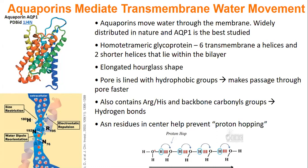An aquaporin is a protein that will transport water through the membrane. There are many different aquaporins. The most studied model is AQP1, or aquaporin-1. This is a glycoprotein, meaning it has sugars attached to it. It's homotetrameric — homo means same, tetra means four — so it's four copies of the same protein that form together to make one channel.